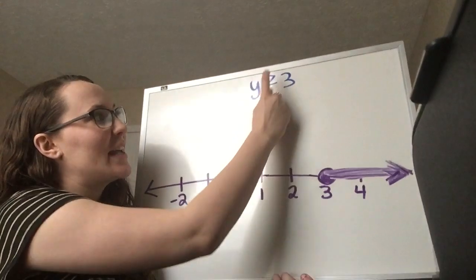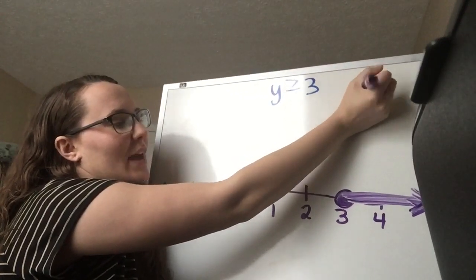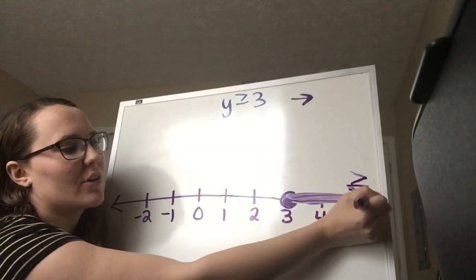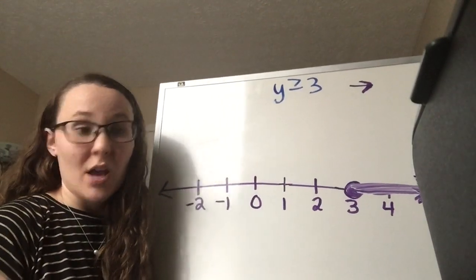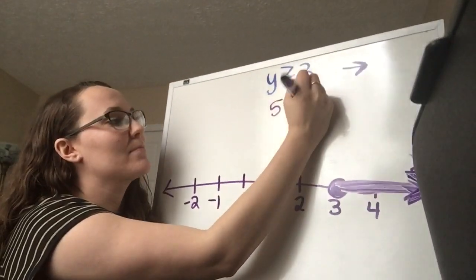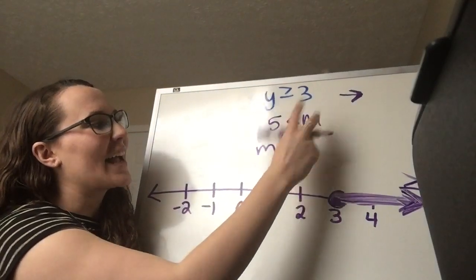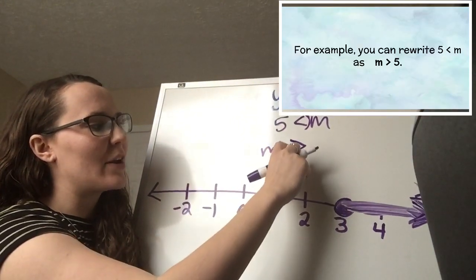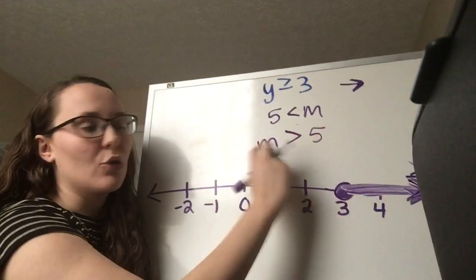A helpful hint: the greater than symbol kind of looks like an arrow, and notice it points the same direction as the shading arrow on the number line. This arrow rule works, but only when the variable is written first. If you get an inequality like 5 is less than m, you can rewrite it with the variable first. Make sure the symbol stays consistent — the bigger section was towards m, so rewritten it becomes m is greater than 5. Once written this way, the arrow rule works.